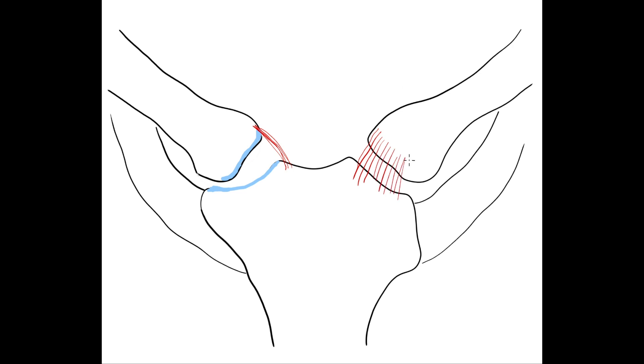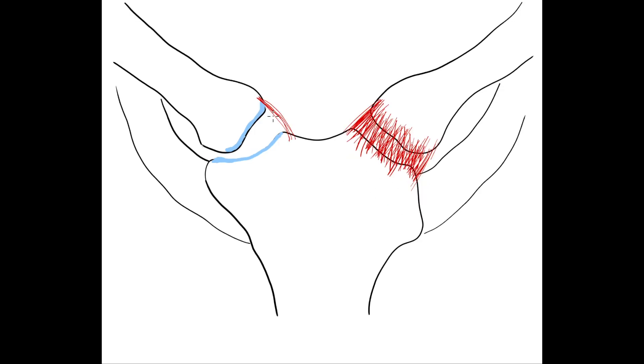The sternoclavicular joint is a saddle synovial joint. The medial end of the clavicle is wide, and the sternal articular surface is at the clavicular notch of the sternum; both surfaces are covered with cartilage. The fibrous capsule surrounds the sternoclavicular joint, mainly forming the anterior and posterior sternoclavicular ligaments. The articular volume is divided by an articular disc. This joint is further stabilized by the costoclavicular ligament, composed of two components running from the inferior surface of the clavicle to the first rib: the posterior fibers oriented medially and the anterior fibers oriented laterally.